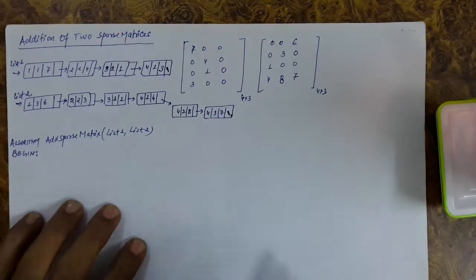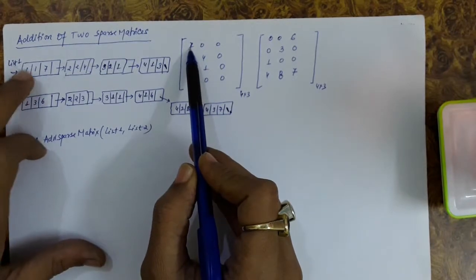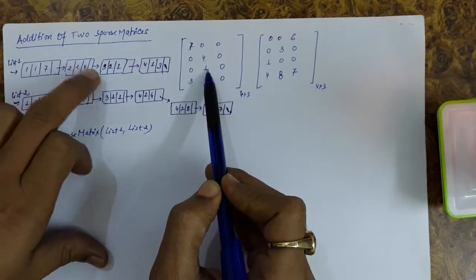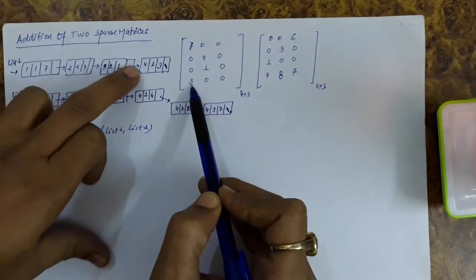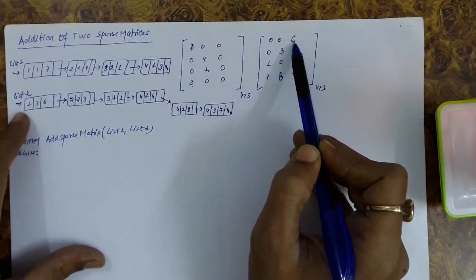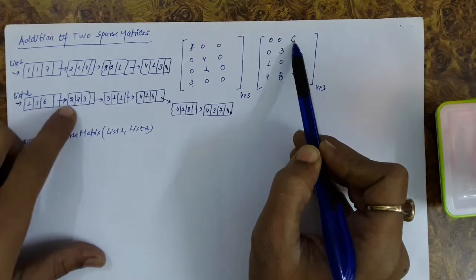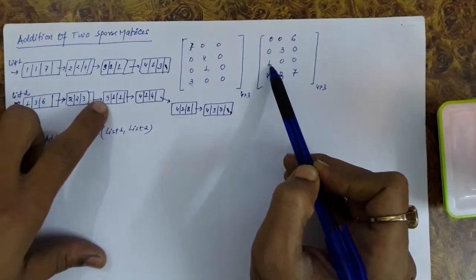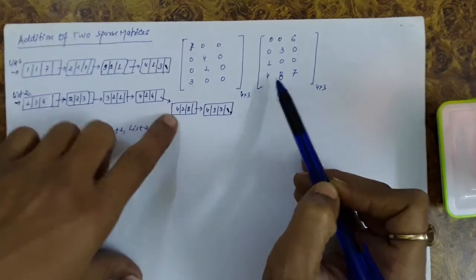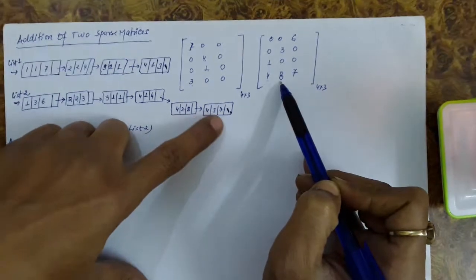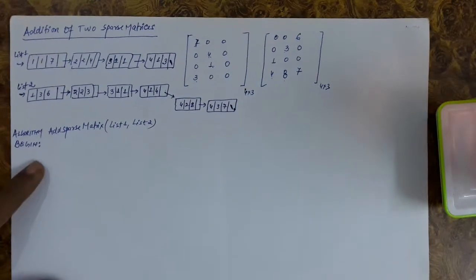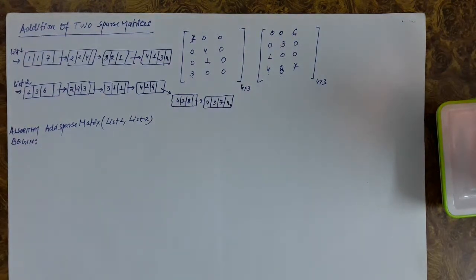This is the first linked list. The first row, first column element is 7; second row, second column element is 4; third row, second column element is 1; fourth row, first column element is 3. For the second list: first row, third column element is 6; second row, second column element is 3; third row, first column element is 1; fourth row, first column element is 4; fourth row, second column element is 8; fourth row, third column element is 7. We have represented these two matrices with linked lists and now we will add them.